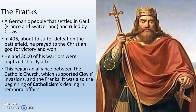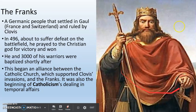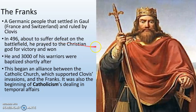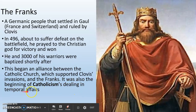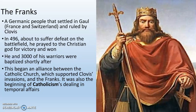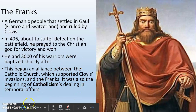The most important Germanic people are the Franks. They are also one of the barbarian groups that helped destroy Rome. They settled in modern-day France and Switzerland, and they are ruled by Clovis. In 496 CE, about to suffer a defeat on the battlefield, Clovis decided to pray to the Christian God for victory, and he won. He and 3,000 of his warriors were baptized shortly thereafter. This begins an alliance between the Catholic Church, which supported Clovis' invasions, and the Franks — and it was also the beginning of Catholicism dealing in temporal affairs like law, land, politics, and money.